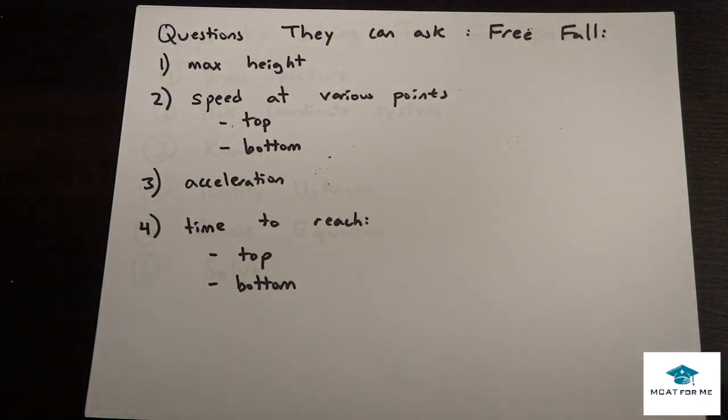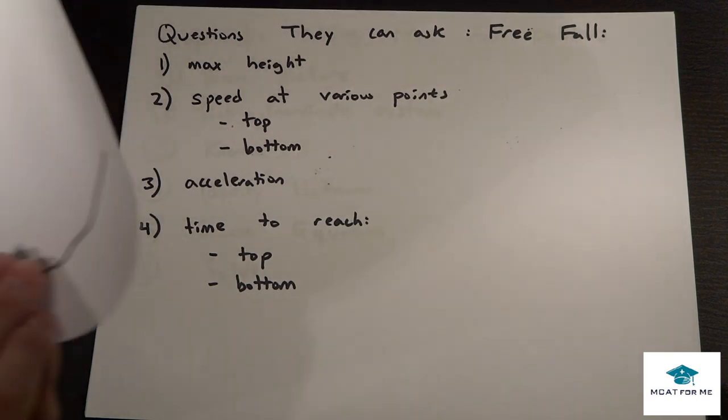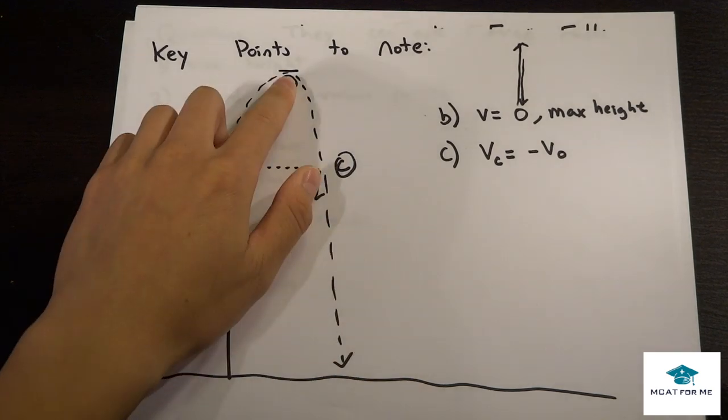The next thing we're going to be talking about are what type of questions can they ask. There's really only four main types. The first one is what's the max height? That's just the same as our point B, our max height.